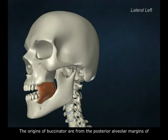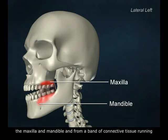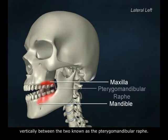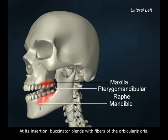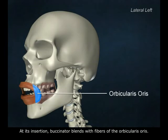The origins of Buccinator are from the posterior alveolar margins of the maxilla and mandible, and from a band of connective tissue running vertically between the two, known as the pterygomandibular raphe. At its insertion, Buccinator blends with fibers of the orbicularis oris.